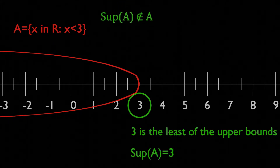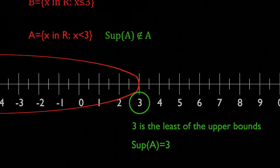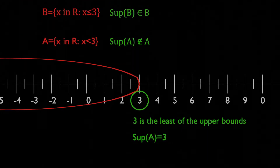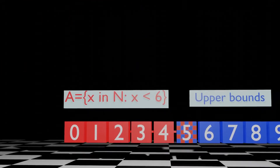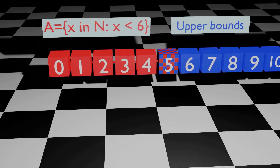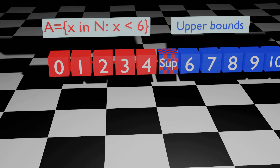We should note that the supremum might or might not be an element of the set. It's easy to see that there's always a supremum for finite sets, which is the maximum element of the set.